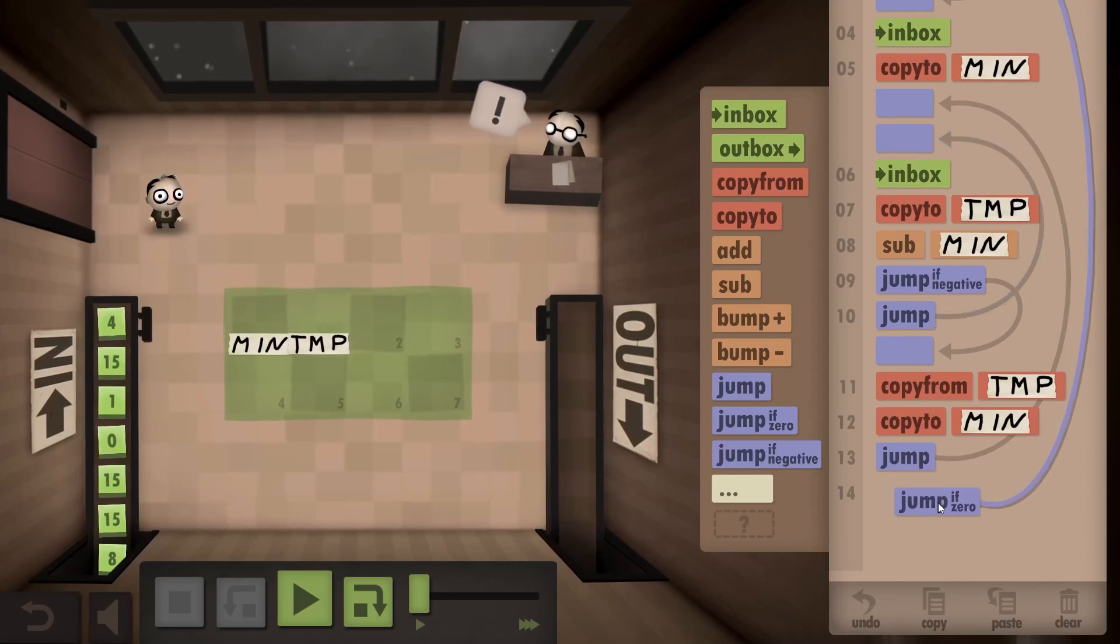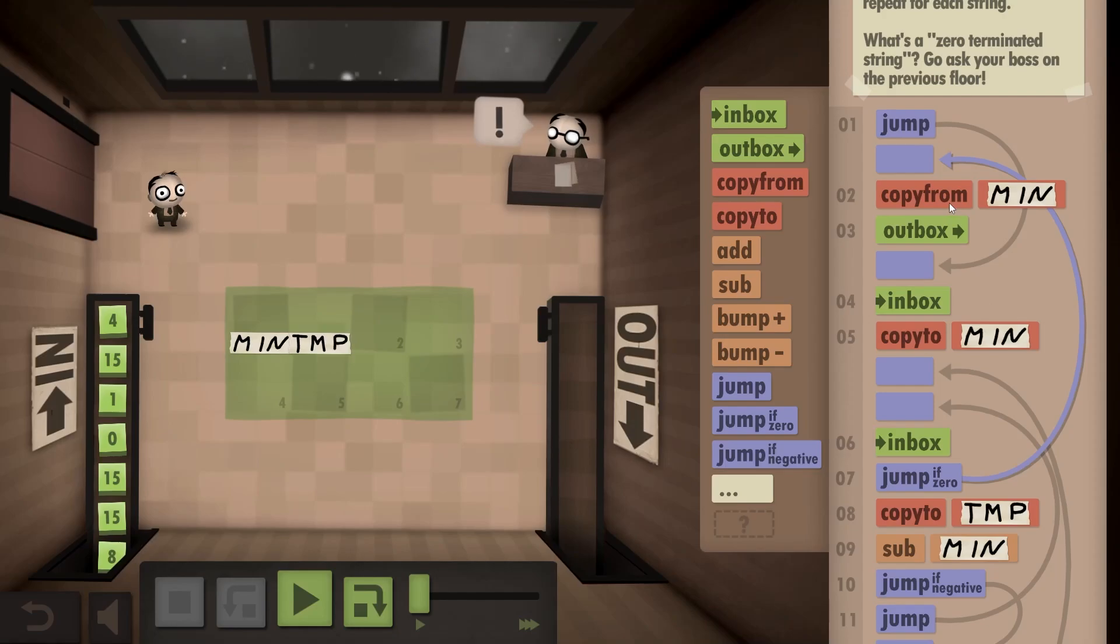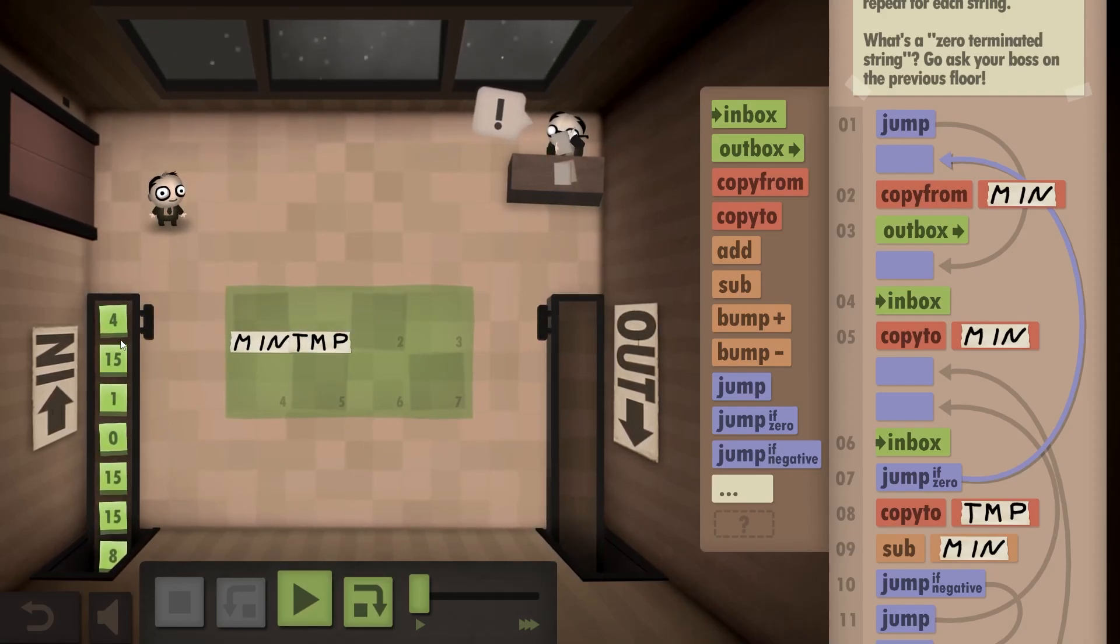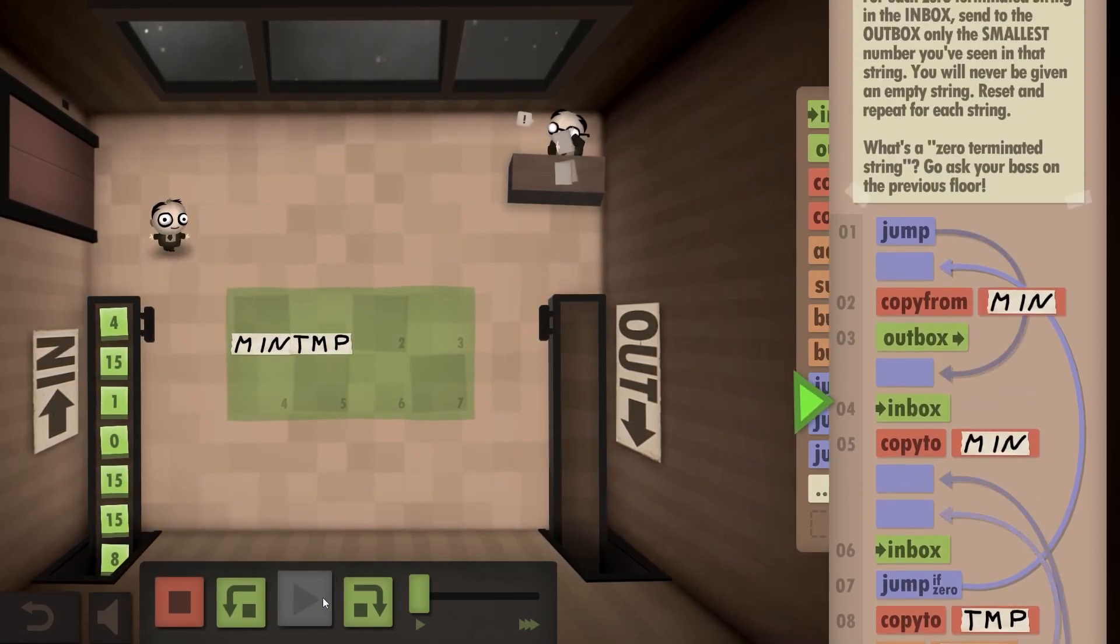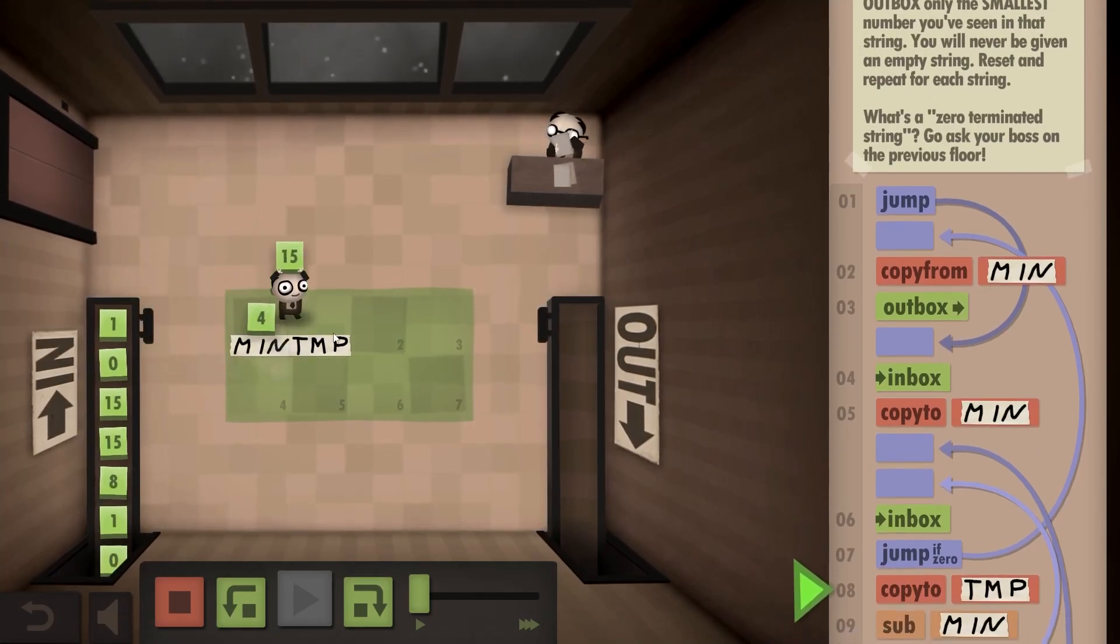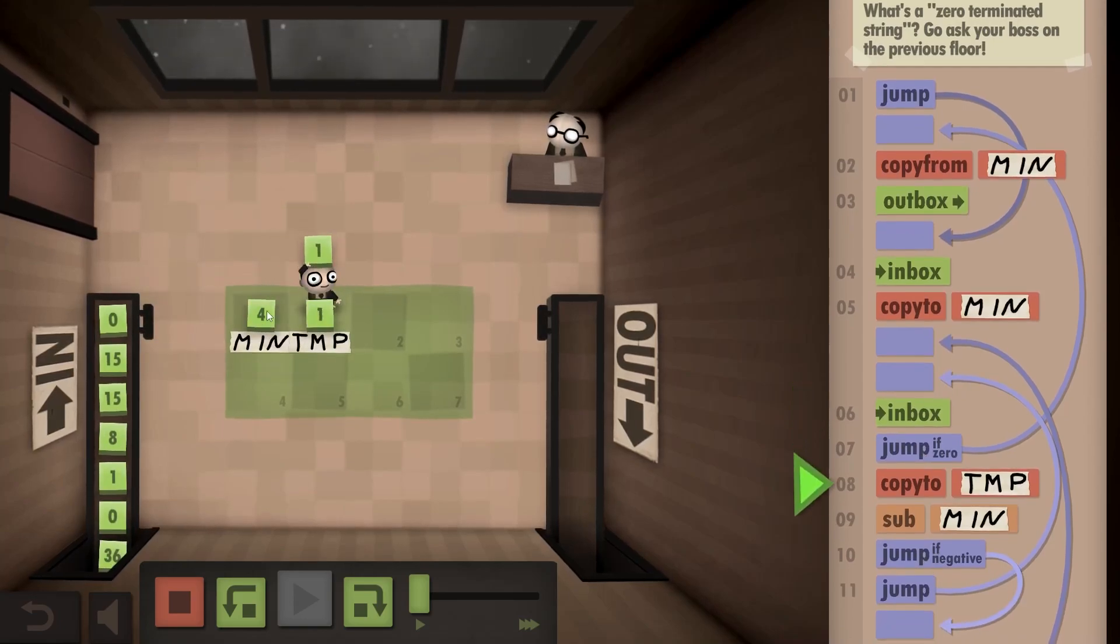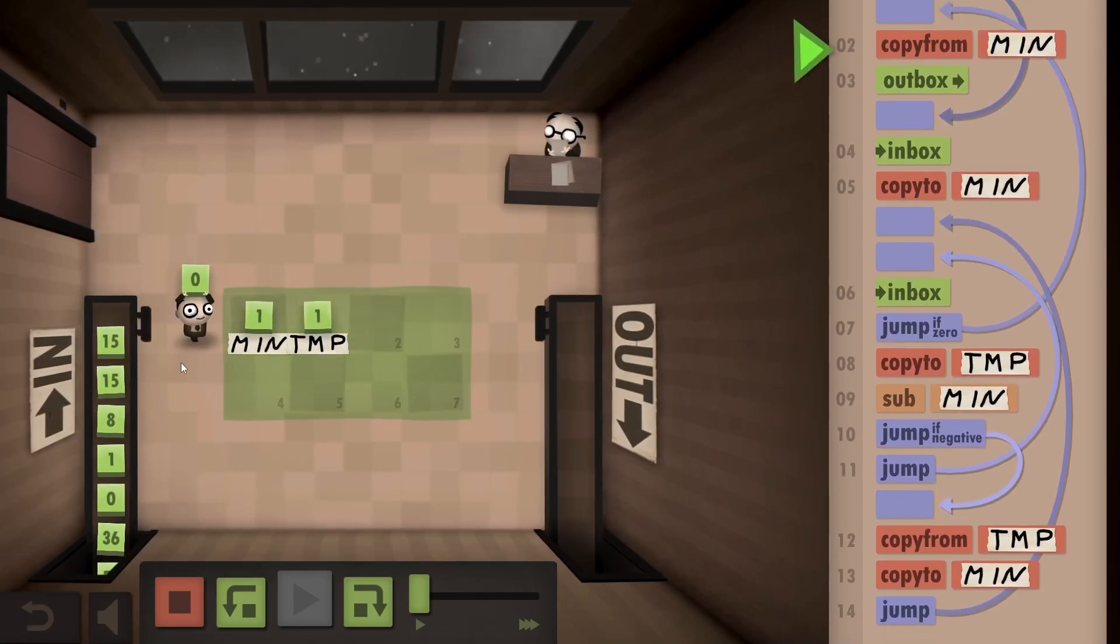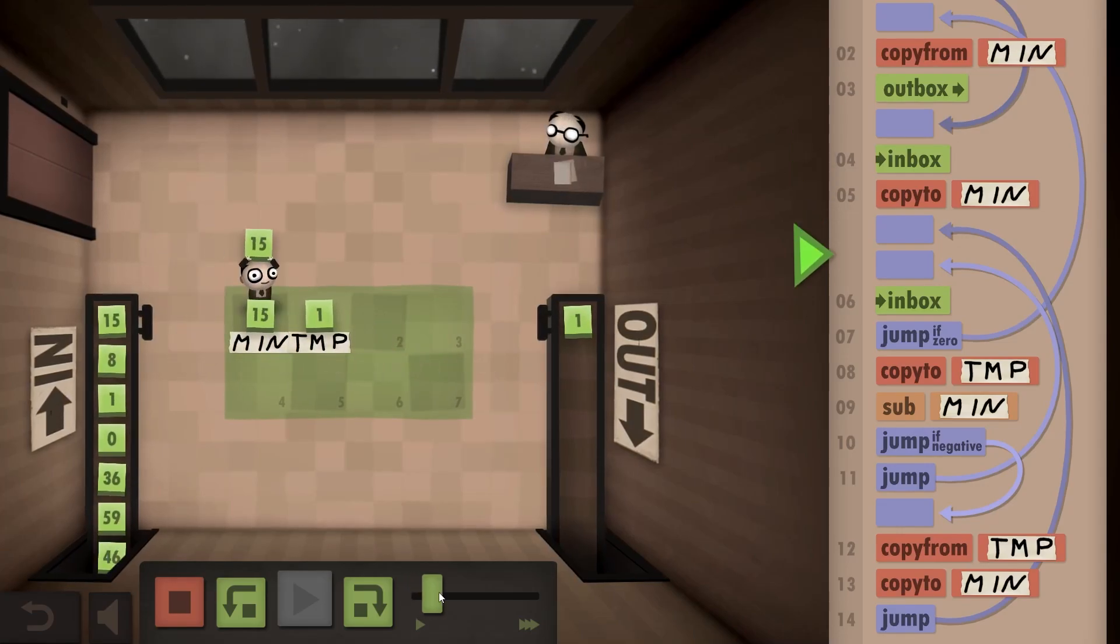Now when should you do this? If you inbox a zero, you should jump there and copy from minimum. This isn't gonna work if there's just one number in the inbox, in the string. But let's see, 4 goes there, now 15 goes there and you do 15 minus 4, which is not negative, so 4 was the minimum. Now 1, 1 minus 4 is negative, so this is the minimum. Then you take a zero, take the stuff from minimum and outbox that and repeat. Cool.